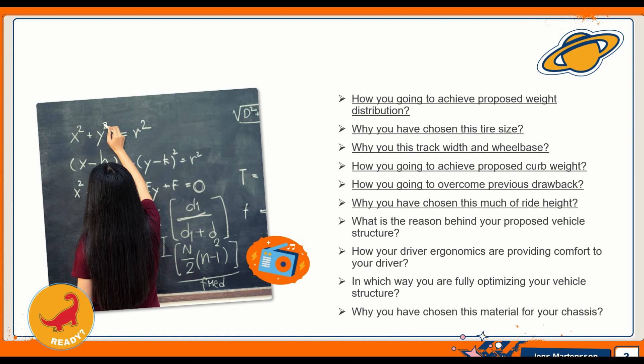5. How are you going to overcome the previous drawback? 6. Why have you chosen this much ride height? 7. What is the reason behind your proposed vehicle structure? 8. How does your driver ergonomics provide comfort to your driver? 9. In which way are you fully optimizing your vehicle structure? 10. Why have you chosen this material for your chassis?